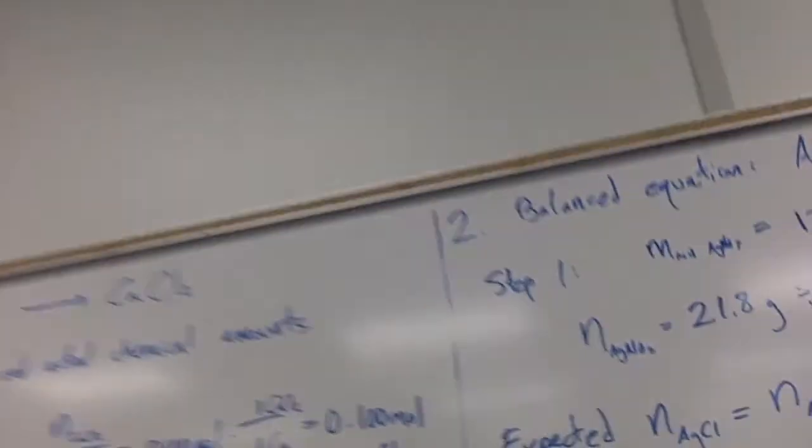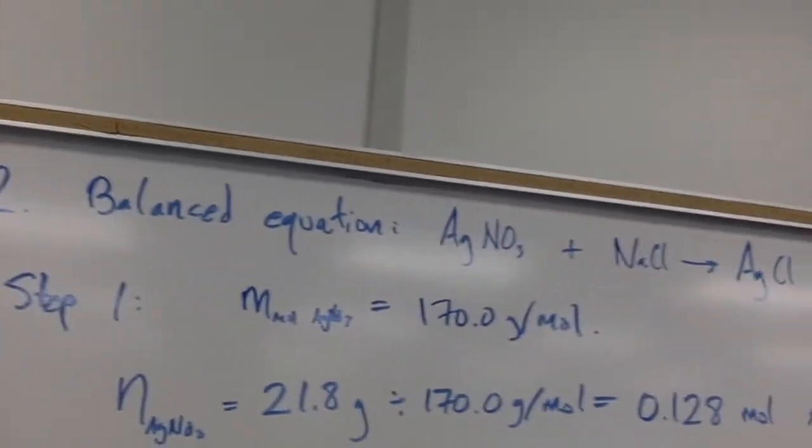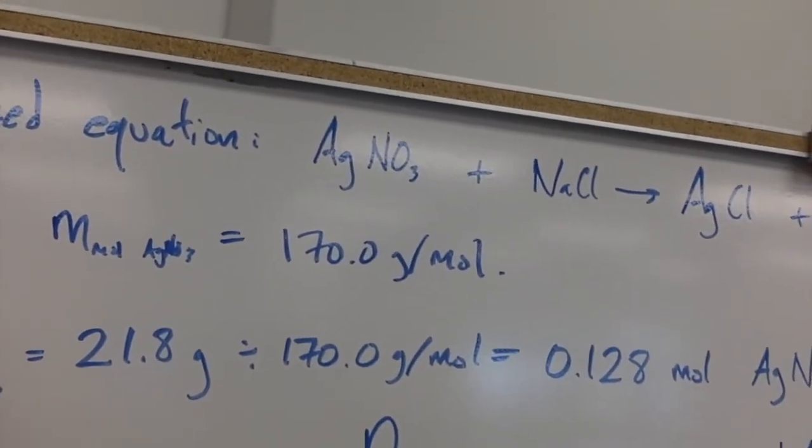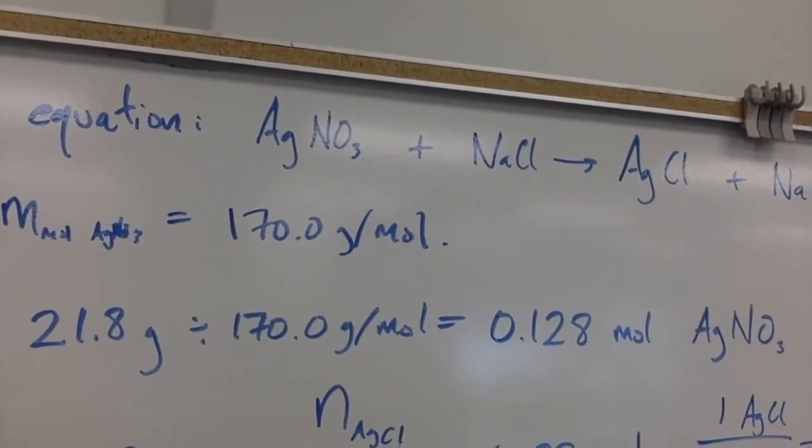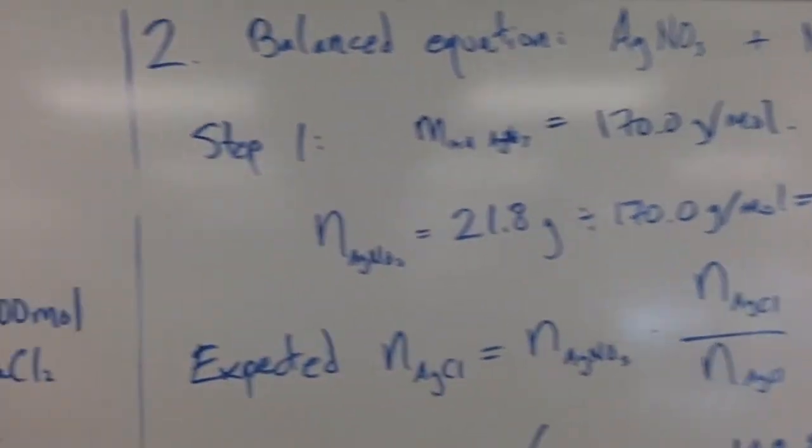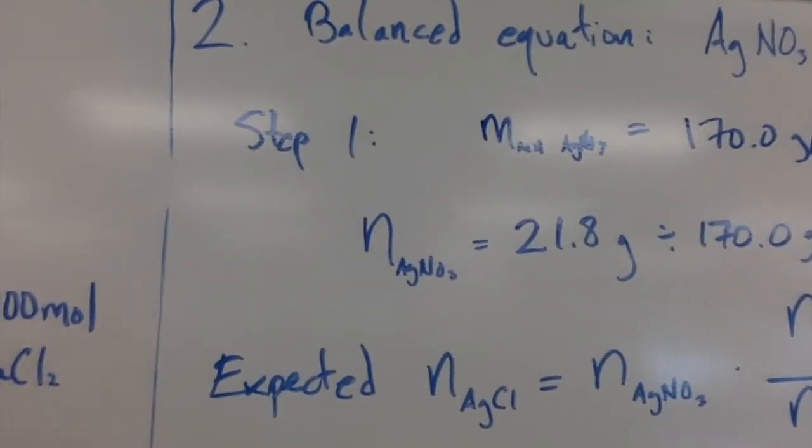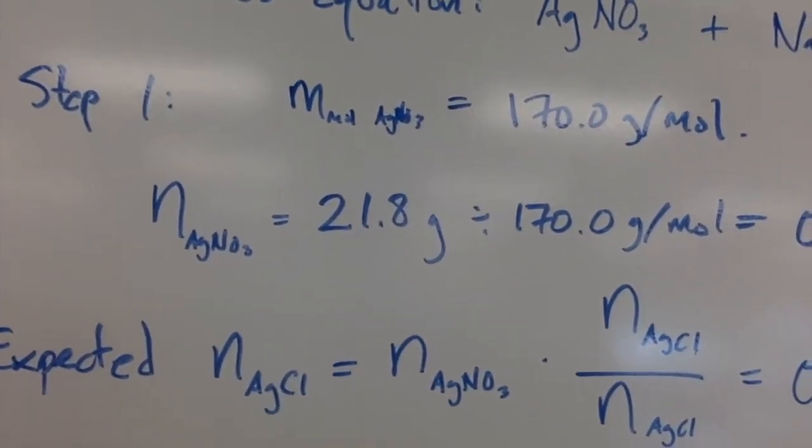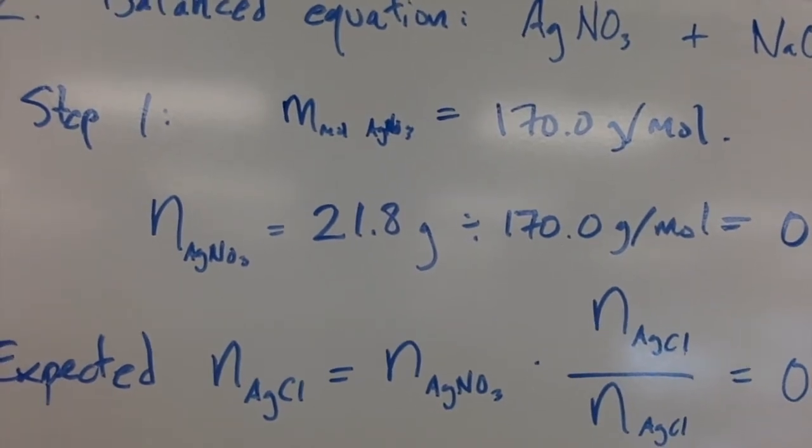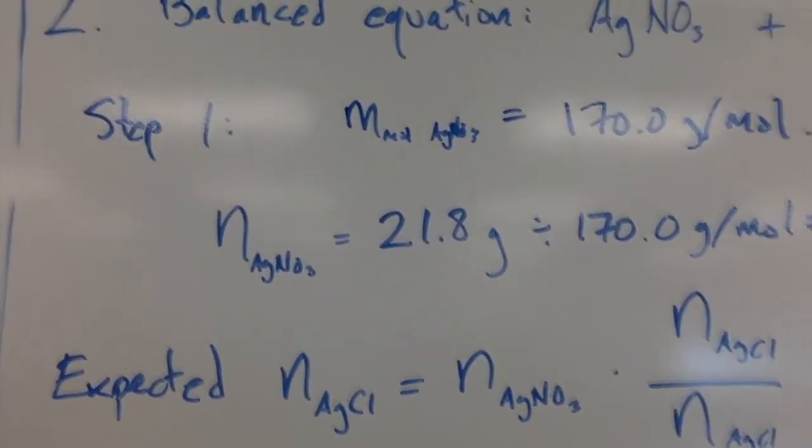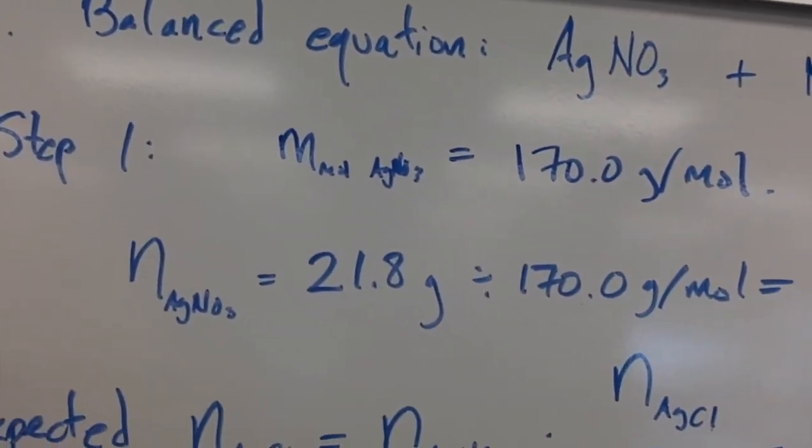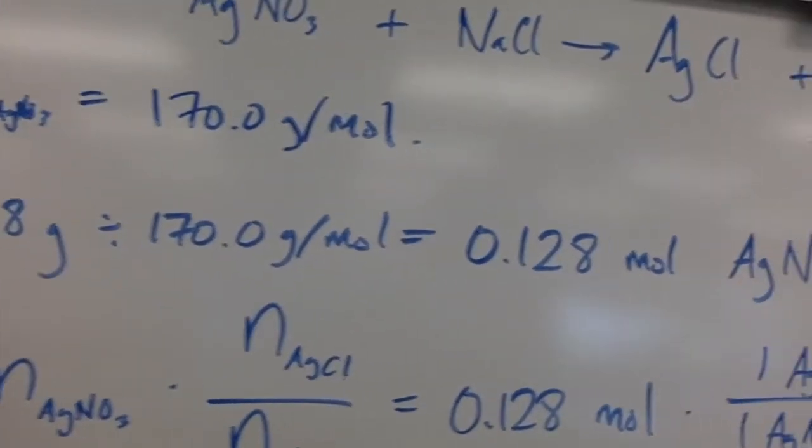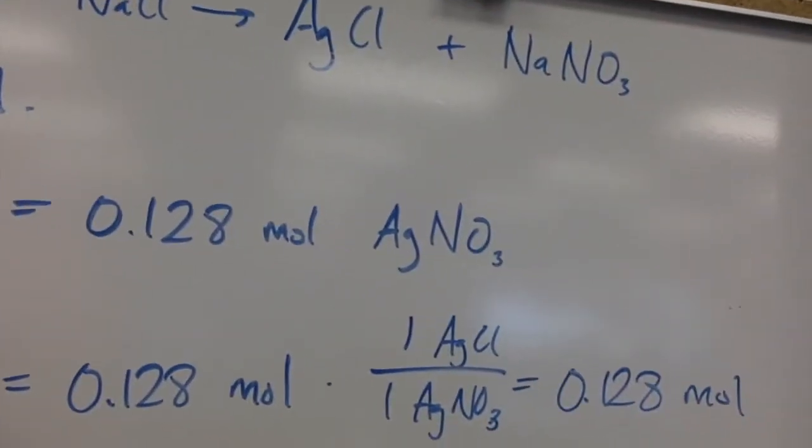First, I stated my molar mass of silver nitrate right there—170.0 grams per mole. Given that, I can now calculate the amount of silver nitrate that I used. There it is: 21.8 grams divided by 170 grams per mole equals 0.128 moles of silver nitrate.